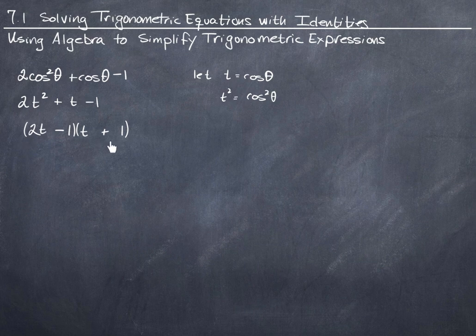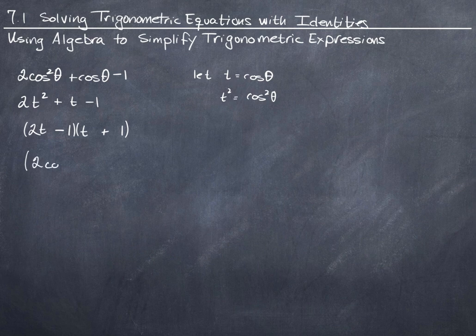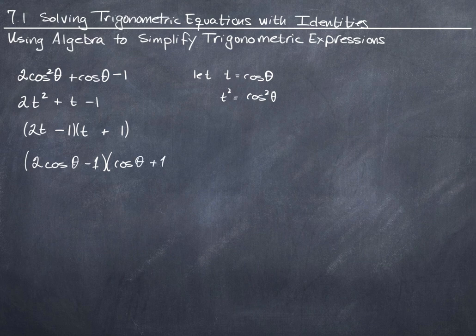is to make the point that we made this substitution in order to be able to factor this. And now it's in factored form, but it's not in the original variable. So I need to back substitute wherever I see a t. I need to replace it with cosine theta. So I'm going to rewrite this now as 2 cosine theta minus 1 times cosine theta plus 1.